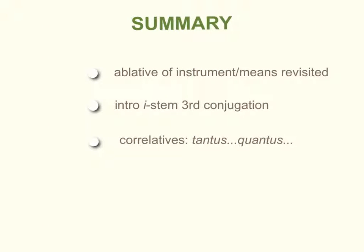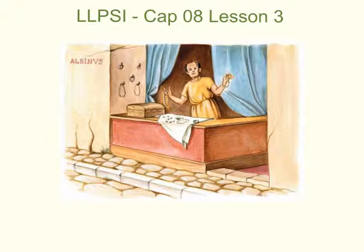We've talked about three topics in this lesson: the ablative of instrument or means revisited, third conjugation i-stem verbs, and the correlative tantus-quantus. All of these are discussed in more detail on the supporting reference sheet. Jot down any questions and bring them into class. That concludes Lesson 3 — I hope you found this helpful. Valete omnes.